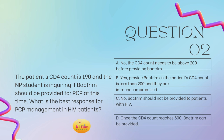Question number two: the patient's CD4 count is 190 and the NP student is inquiring if Bactrim should be provided for PCP at this time. What is the best response for PCP management in HIV patients by the nurse practitioner? Is it A, no, the CD4 count needs to be above 200 before providing Bactrim? B, yes, provide Bactrim as the patient's CD4 count is less than 200 and they are immunocompromised? C, no, Bactrim should not be provided to patients with HIV? Or D, once the CD4 count reaches 500, the Bactrim can then be provided? Take a moment and tell me what you got in the comments.